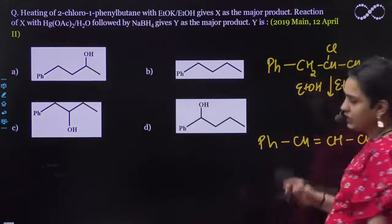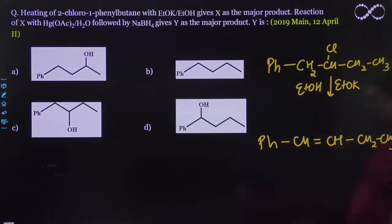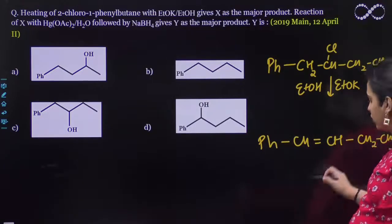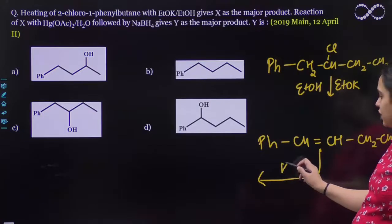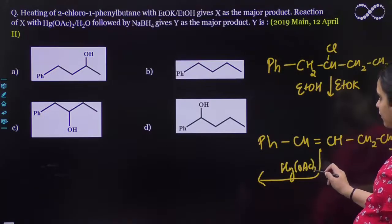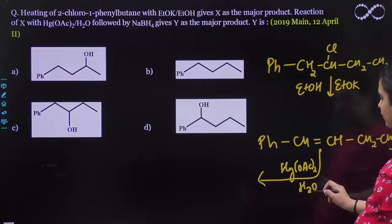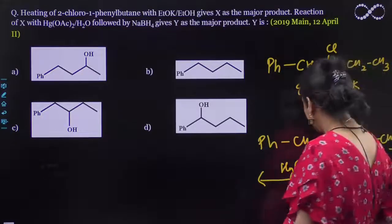So this alkene is in conjugation with the phenyl, so this alkene is formed. And then after that, you will have oxymercuration-demercuration followed by NaBH4.